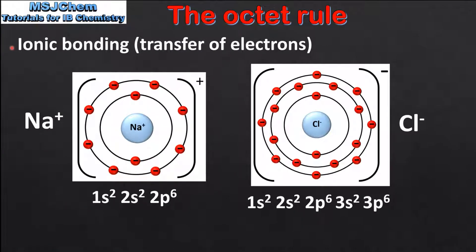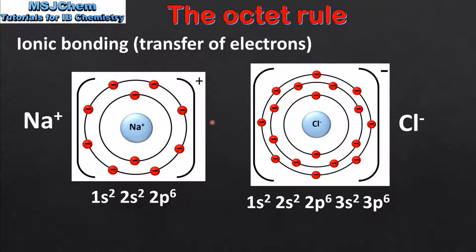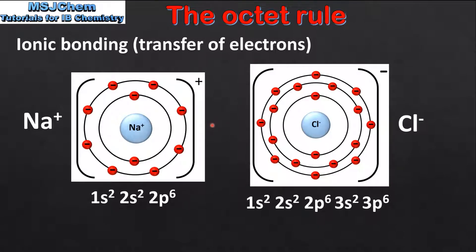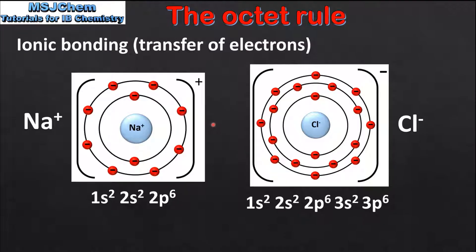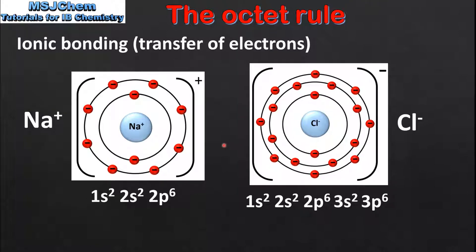Next we'll look at ionic bonding, which is the transfer of electrons. On the left we have a sodium ion and on the right we have a chloride ion. During the formation of an ionic bond, a sodium atom transfers an electron to a chlorine atom. This results in the formation of a sodium ion and a chloride ion. The sodium ion now has a full valence shell and has the same electron configuration as the noble gas neon. The chloride ion has also achieved a full valence shell and now has the same electron configuration as the noble gas argon. In summary, ionic bonding results in the formation of ions, each with a full valence shell and the same electron configuration as a noble gas.